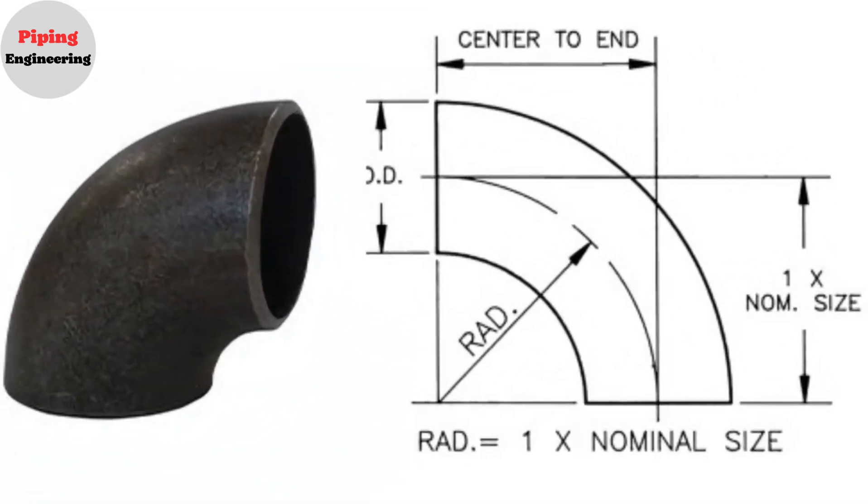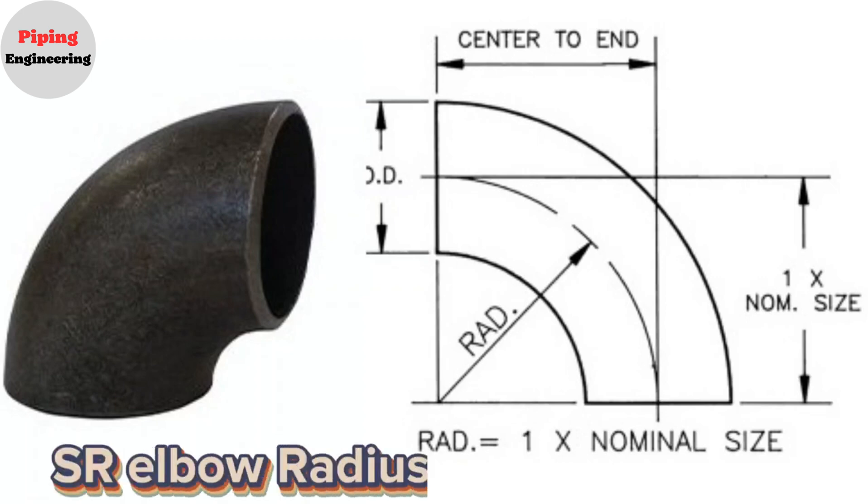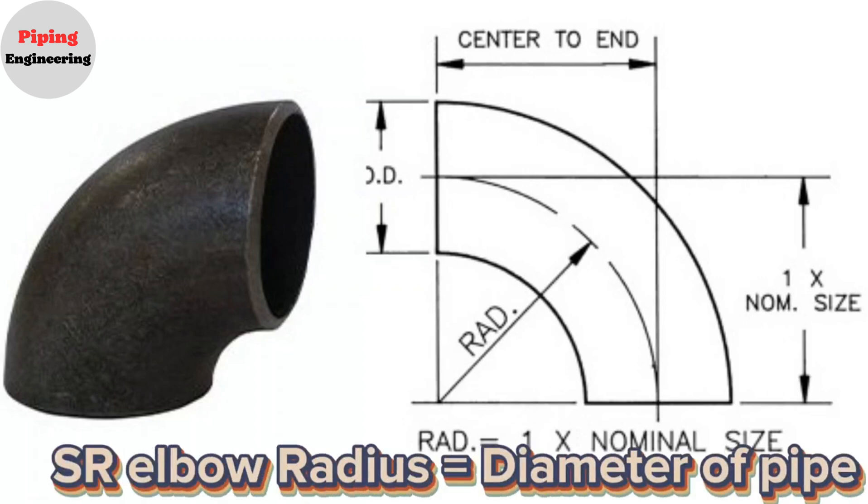Short radius elbows 1 times D is having the radius equivalent to 1 times the diameter of the pipe. So SR elbow radius equals diameter of pipe.